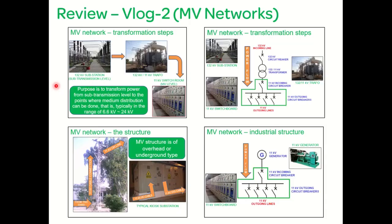First, a review of our last vlog which was related to the medium voltage networks. We discussed how the power at sub-transmission level is converted into medium voltage level using a power transformer, and then power reaches the medium voltage switchgear. This conversion process is done in the high voltage substation, and the medium voltage level used is from 6.6 kV to 24 kV — however, this voltage level can go up to 40 kV. Power from the HV substation is further distributed either using overhead lines or through underground cables.